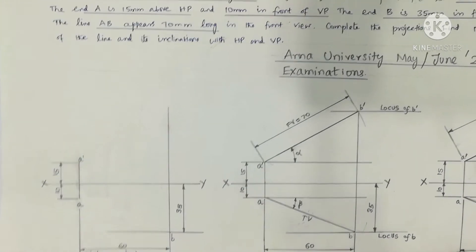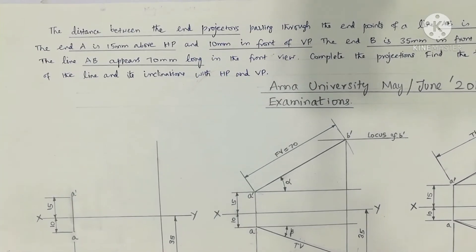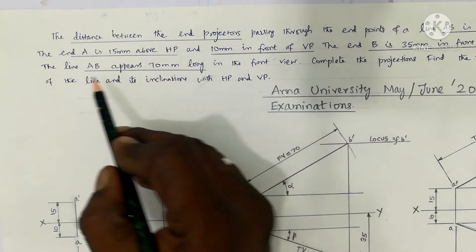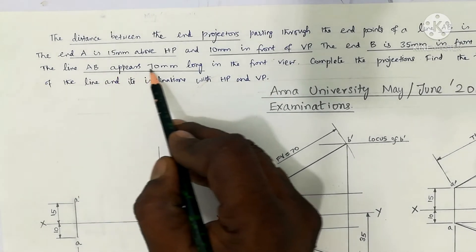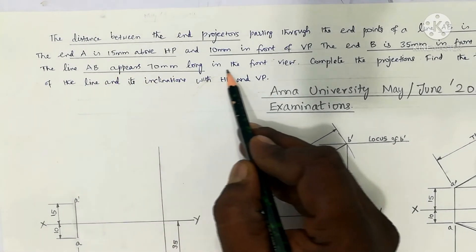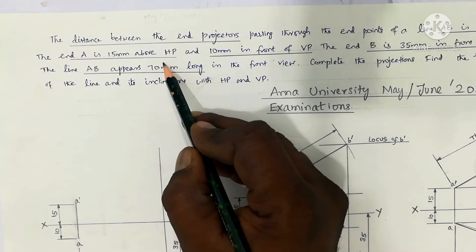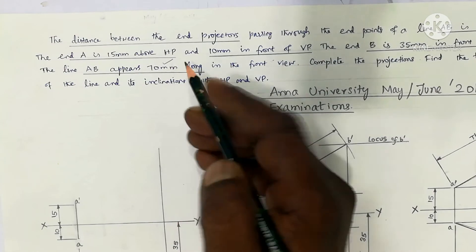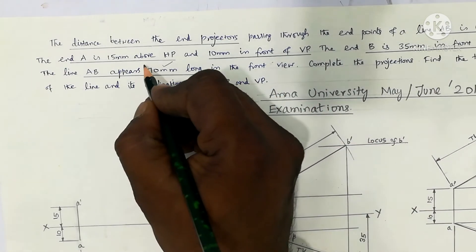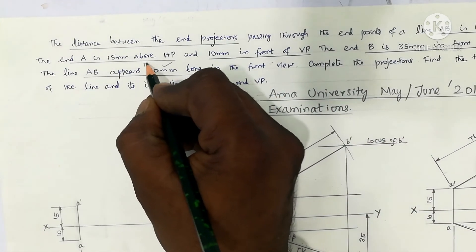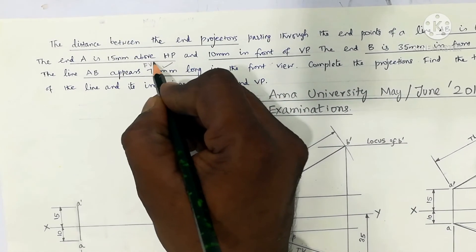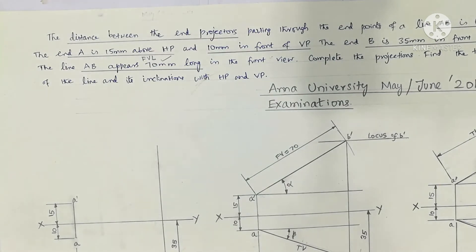Go through the question. The line AB appears 70mm long in the front view. So 70mm is the FVL — that is, the front view length. FVL is the front view length, which is 70mm.